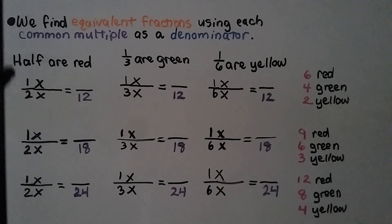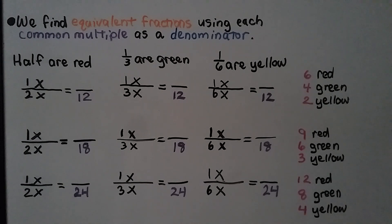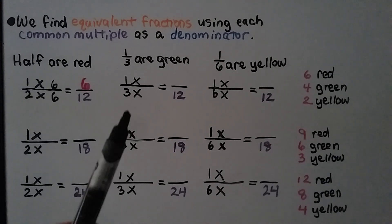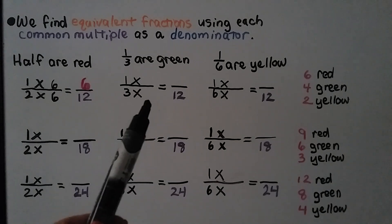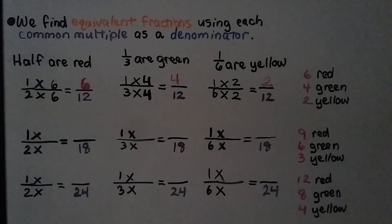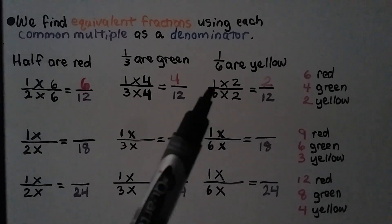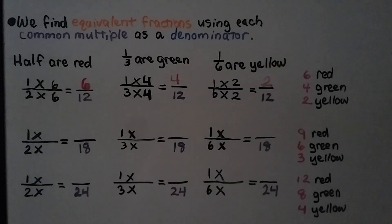For the denominator twelve: two times six equals twelve, so we multiply both numerator and denominator of one-half by six, giving six-twelfths. Three times four equals twelve, so we multiply one-third's numerator by four, giving four-twelfths. Six times two equals twelve, so we multiply one-sixth's numerator by two, giving two-twelfths.